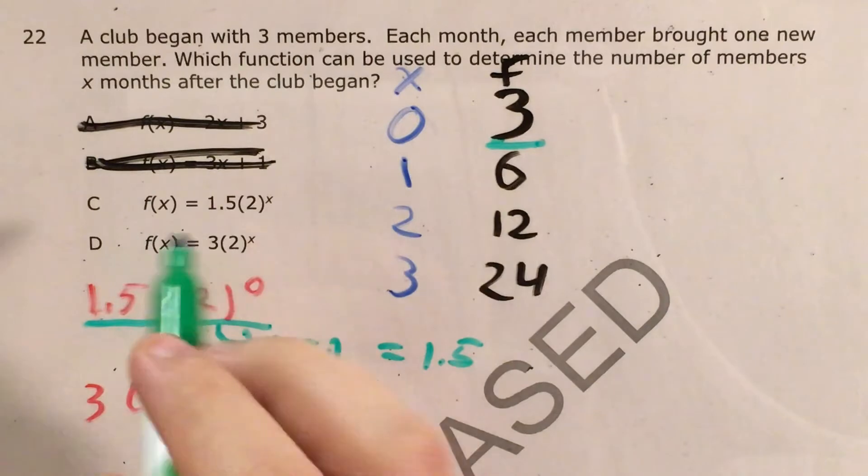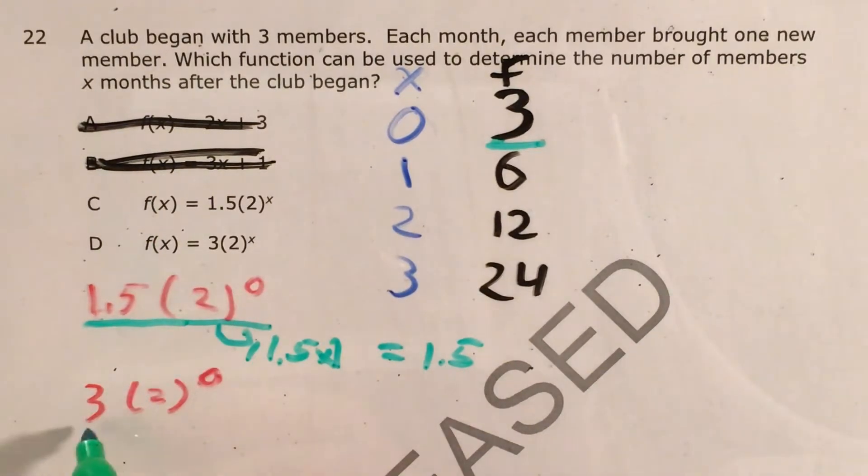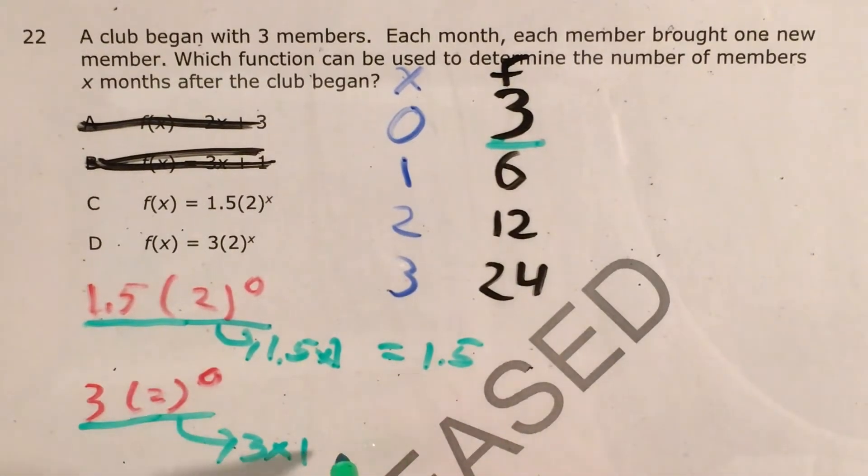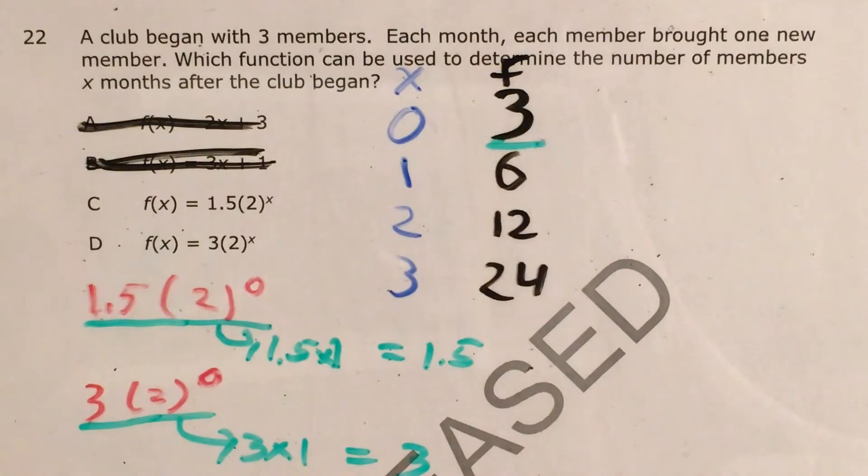But let's try it with choice D. Two to the zero is one. So 3 times two to the zero is the same thing as 3 times one, which is 3.